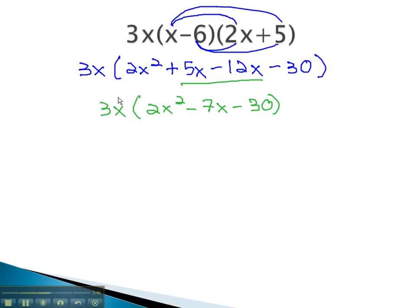Finally, to finish the problem, we distribute the monomial into the parentheses. This will give us 6x cubed, minus 21x, minus 6, minus 90x. Actually, that should be 21x squared, adding the exponents 1 plus 1 to give us the 2.